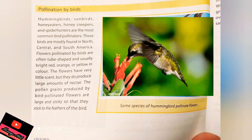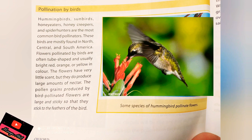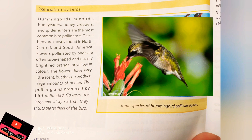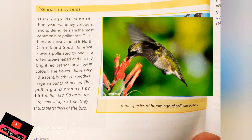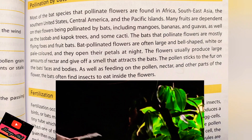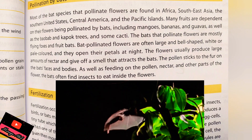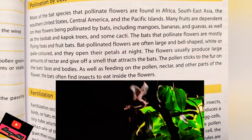Now we come to flowers pollinated by birds. This hummingbird is sucking nectar and, meanwhile, also performing pollination — it is transferring pollen grains from the anther to the stigma. Isn't it lovely? One more interesting thing: pollination is also done by bats.